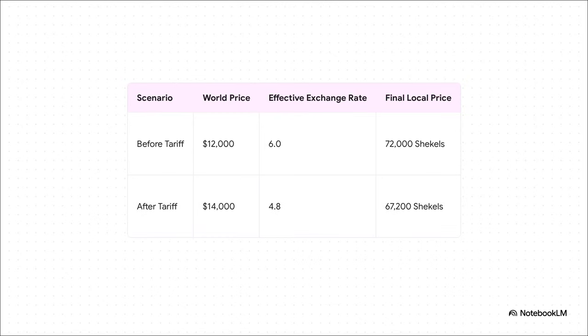So here it is, the key takeaway, all laid out side by side. You can see so clearly how powerful that change in the effective exchange rate was. It was so strong that it completely wiped out the $2,000 increase in the car's dollar price, and then some, leading to an overall price decrease.